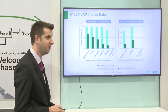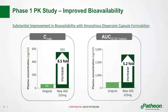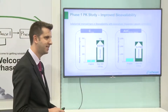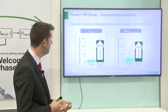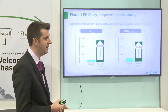This formulation was then taken forward for an early first-in-man study. With the crystalline API we were getting very low Cmax and very low area under the curve, whereas when taken as a capsule formulation into a first-in-man study, we've got an 8.5-fold increase in Cmax and a 5-fold increase in area under the curve, which by any measure is a fantastic success. The success of this molecule in Phase 1 meant it was to press on through Phase 2 and beyond.